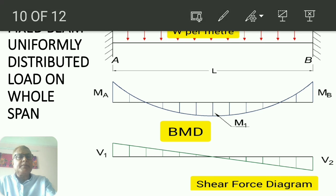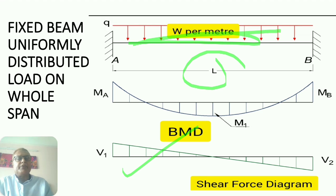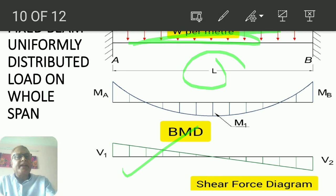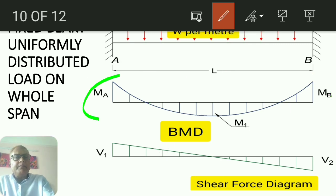Shear force is the same for fixed beam, but bending moment will differ. You can see bending moment diagram shows MA at support A and MB at support B. Here the bending moment at MA and bending moment at MB will be negative.